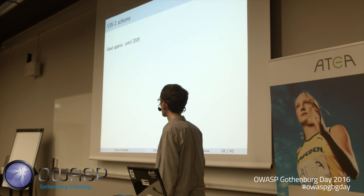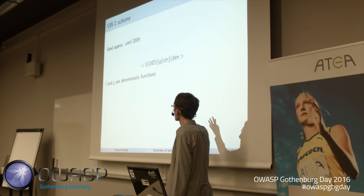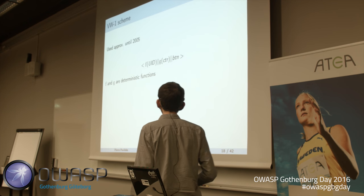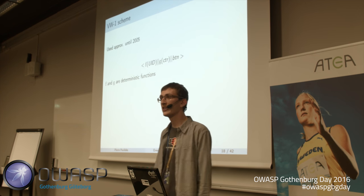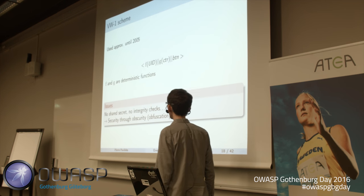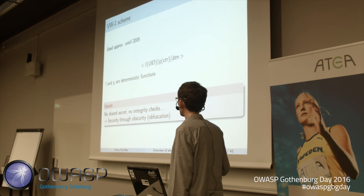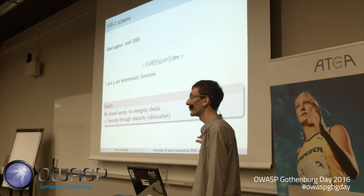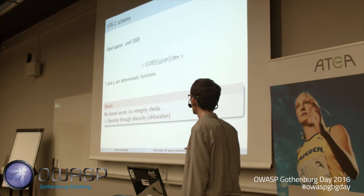Volkswagen 1 was used until 2005. It applies some function F to the UID of the remote, another function G to the counter, then appends the button — with F and G being deterministic. The issue is there is no secret key, no integrity check whatsoever — it's pure security through obscurity. If someone reverse engineers F and G, they can clone a remote just by obtaining the UID from a single captured rolling code.